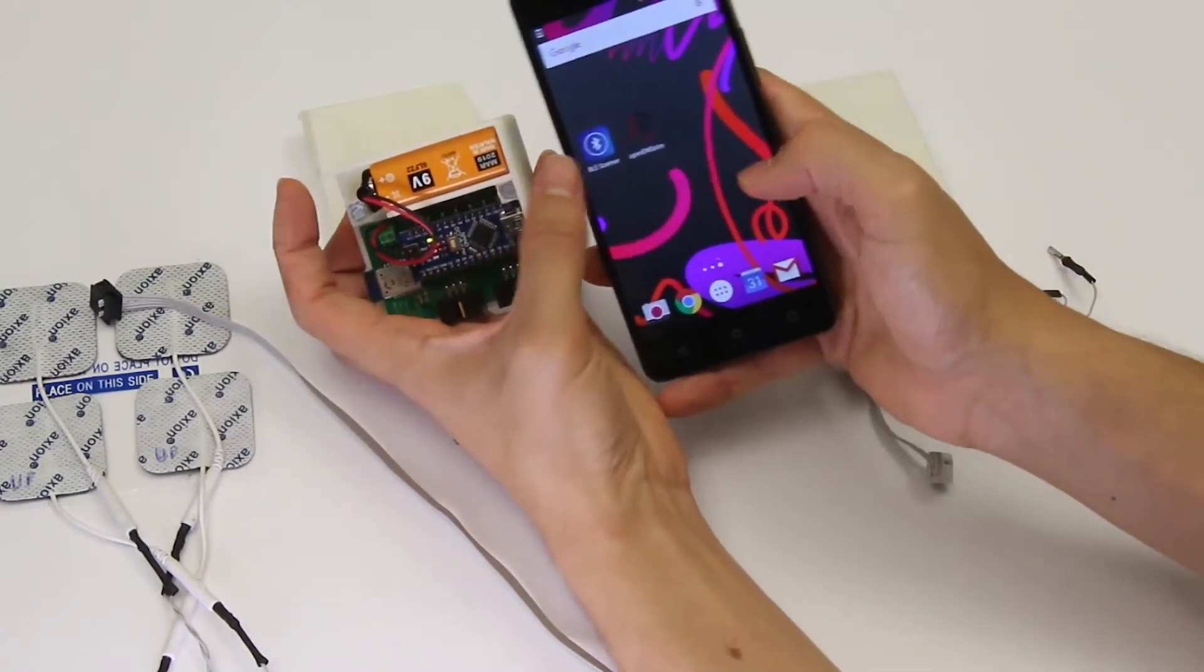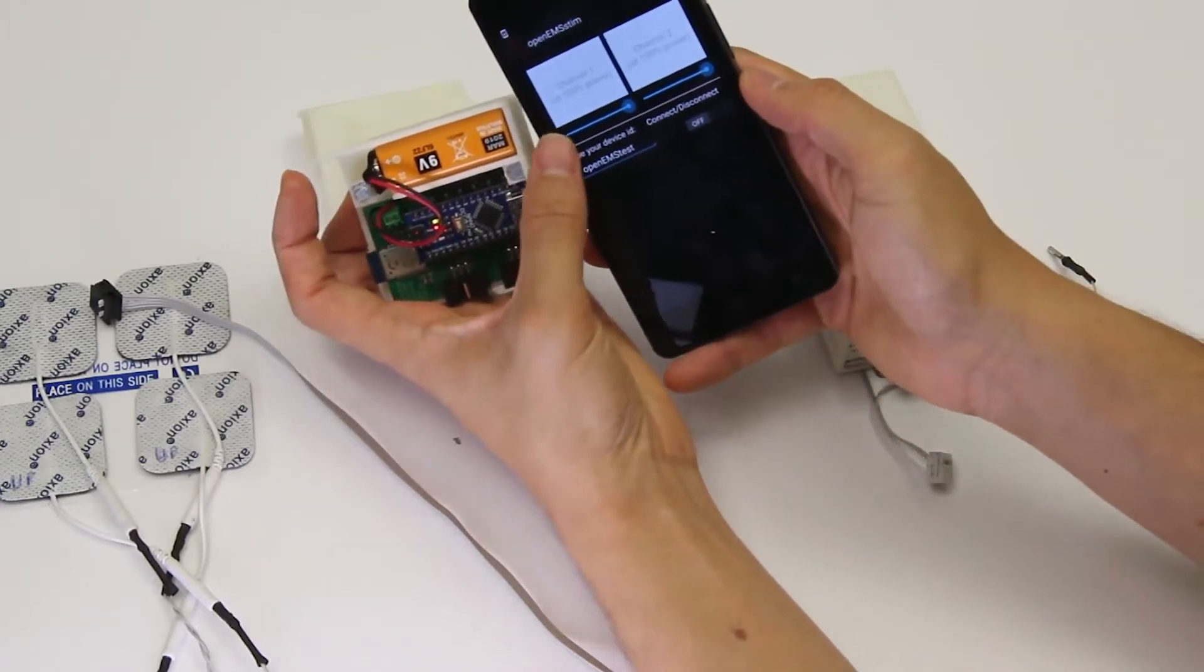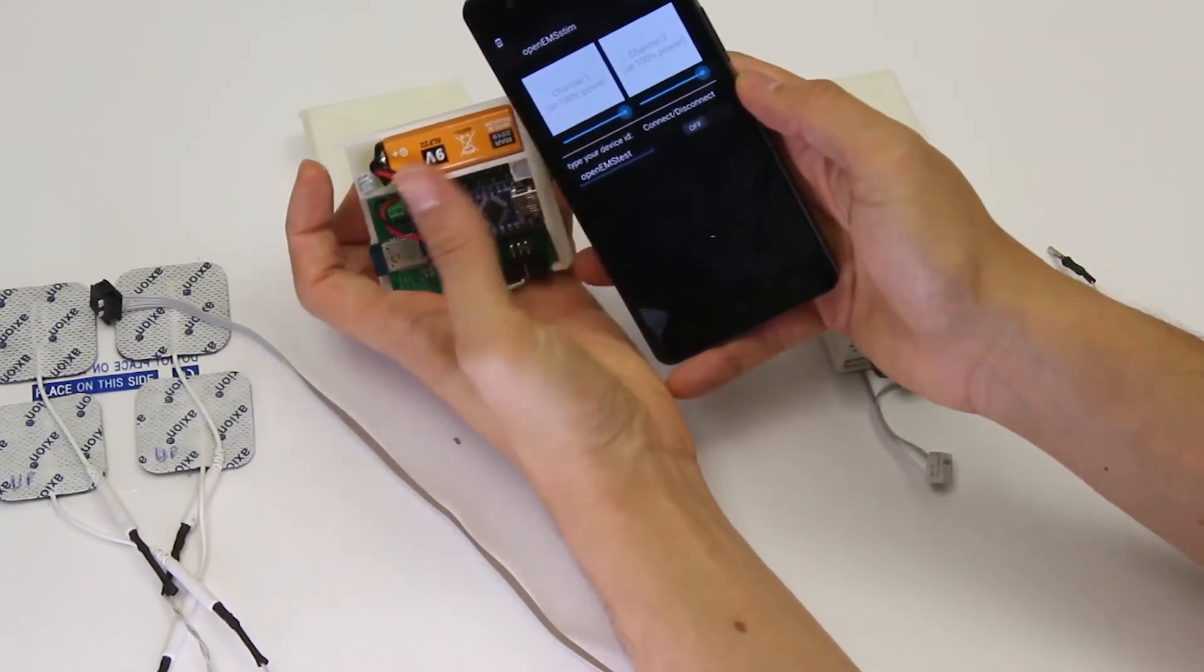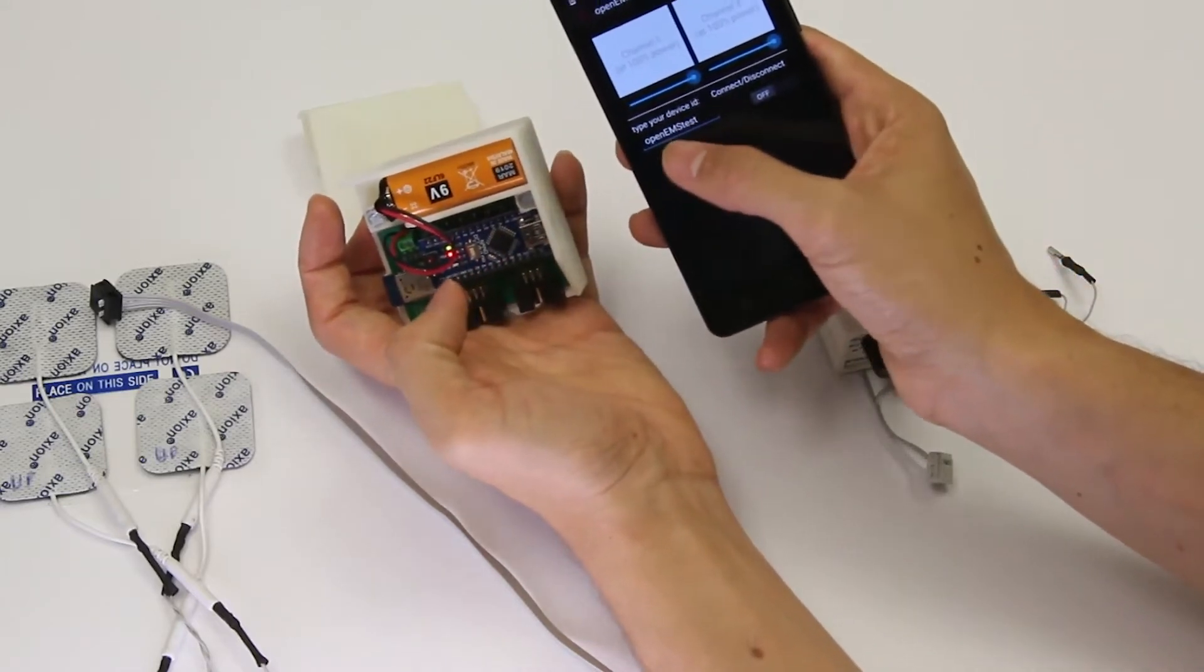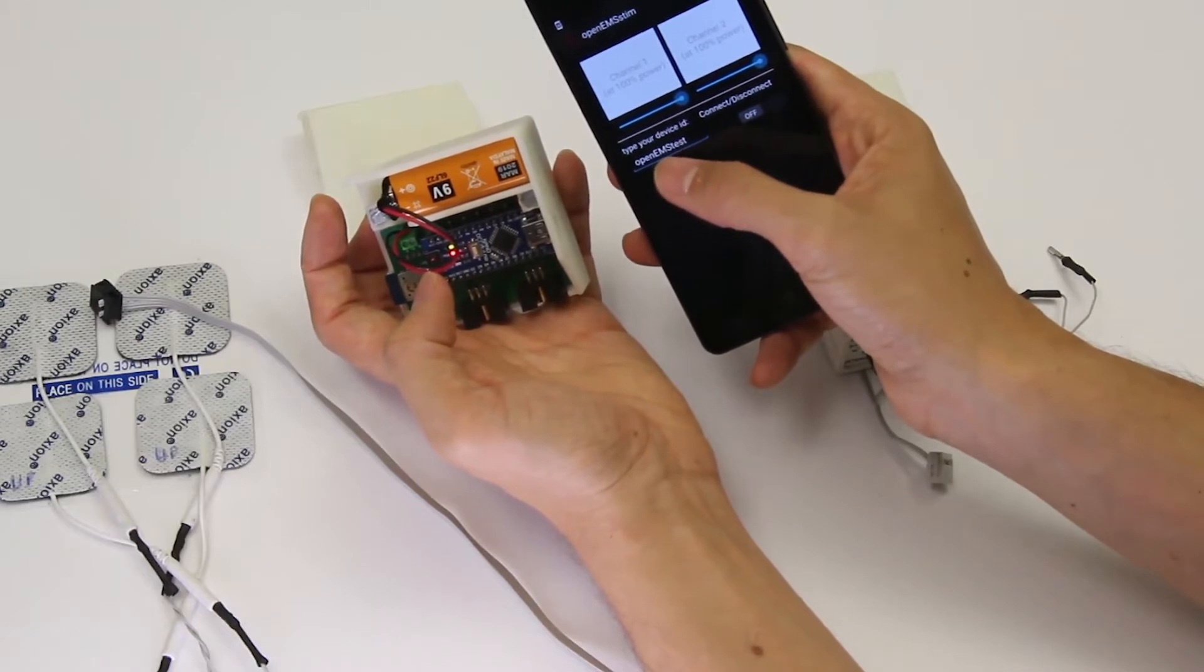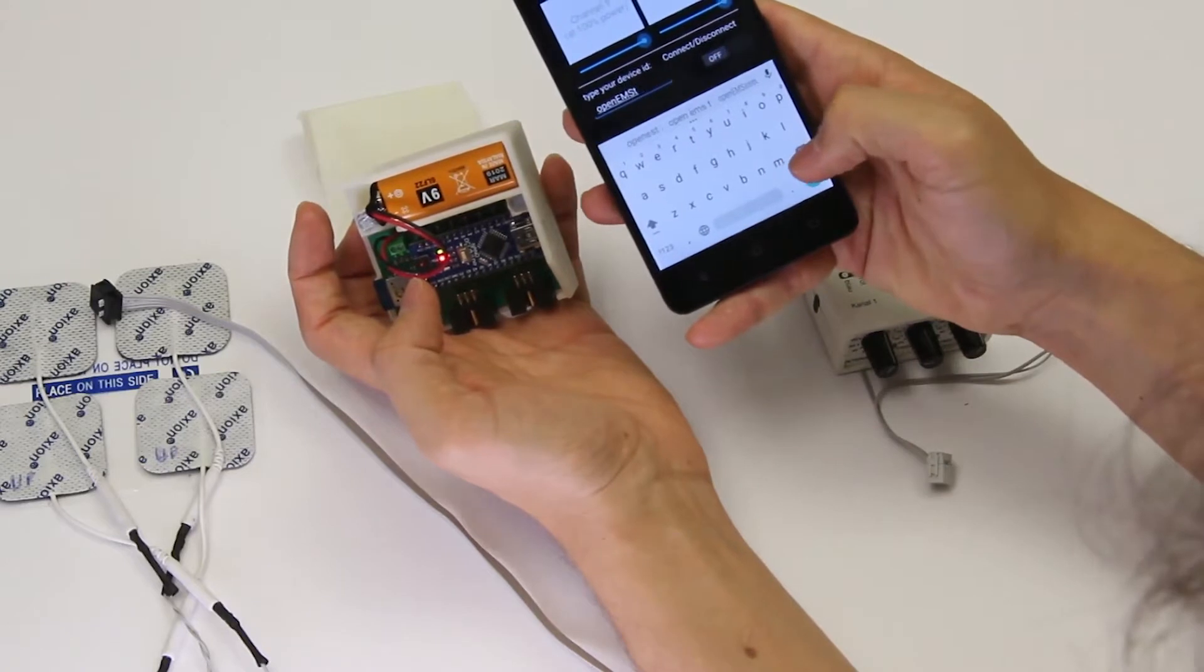Now the next step is to open the EMS Stim Control app. As you can see here it says some different string for the device indicator. We have to change that. Now we know that our device is called OpenEMS3, so I'm going to type OpenEMS3.